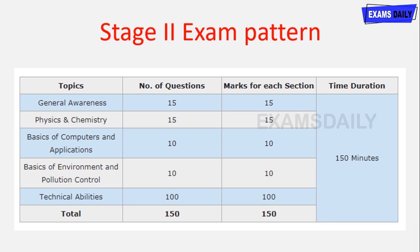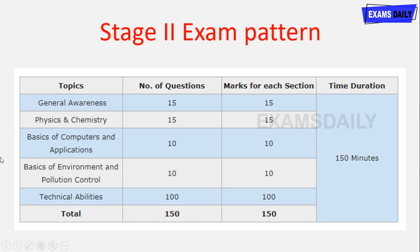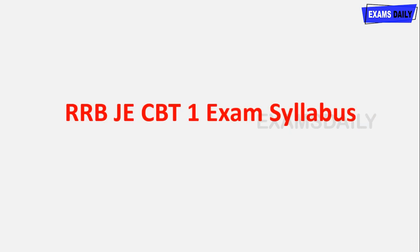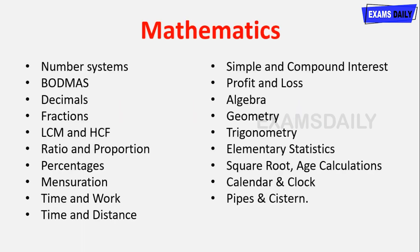Basics of computer and application: 10 questions, 10 marks. Basics of environmental pollution control: 10 questions, 10 marks. Technical abilities: 100 questions, 100 marks. Total: 150 questions and 150 marks for Stage 2. Next, the CBT 1 exam syllabus — starting with mathematics.